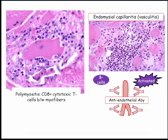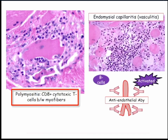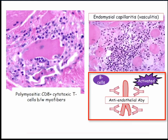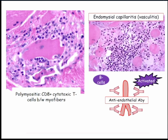They'll describe a patient with weakness, may or may not give a CK, and the derivative question will be purely pathology. For polymyositis, the effector cell is CD8 cytotoxic cells spread throughout the muscle. For dermatomyositis, it's capillaritis — essentially a vasculitis — with activated B cells and anti-endothelial antibodies. That distinction is the important one. Expect questions asking you to identify the effector cell given a clinical scenario.